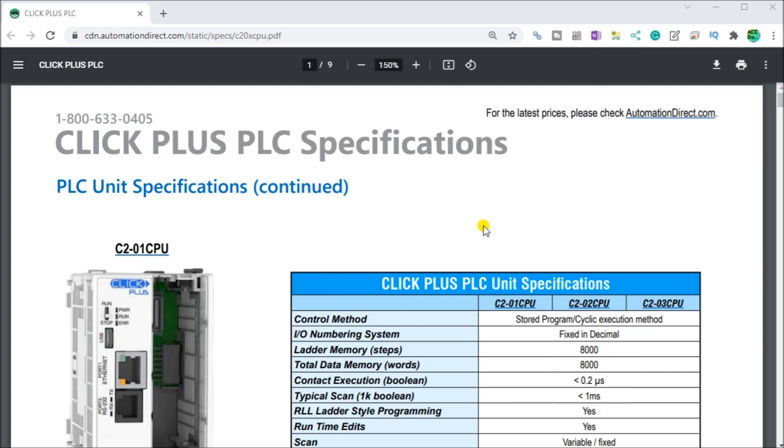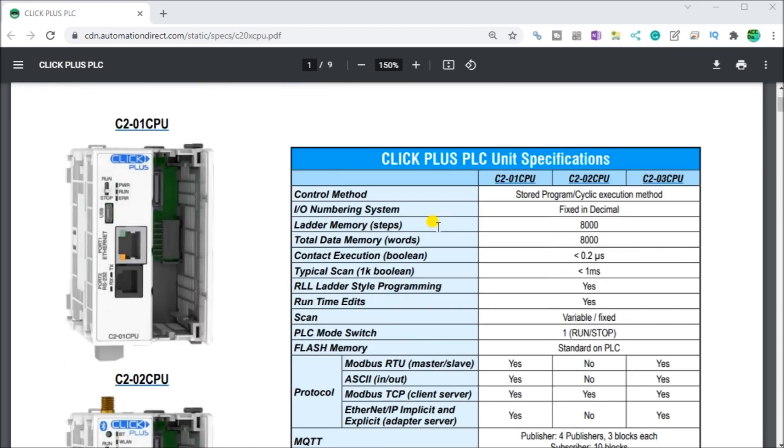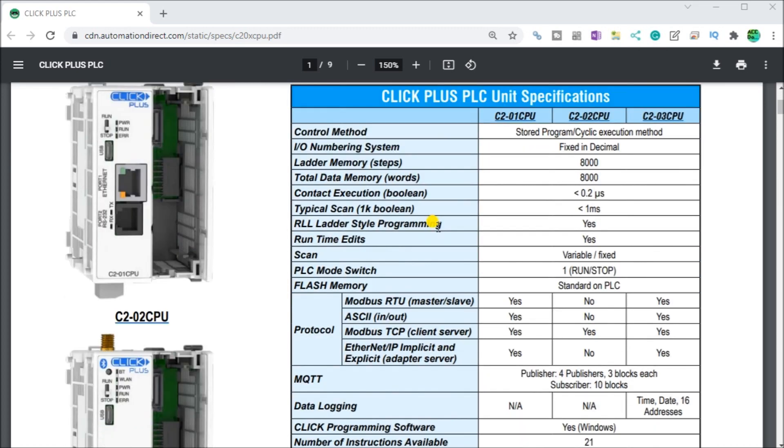Calling up the specifications for the Click Plus PLC, you can see that we have flash memory standard on the PLC. So I know that my PLC program itself is stored in this flash memory which will be non-volatile so it'll automatically be saved when I lose power. So my battery in the Click does not support the program itself, it's used for data memory and I/O.